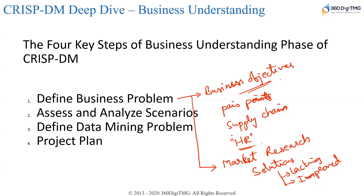When you define the business objective, there should be clear deliverables coming out of your project and a defined success criteria. Not just data scientists or chief data officers, but your business folks, domain experts, analysts, and subject matter experts — everyone should be involved.